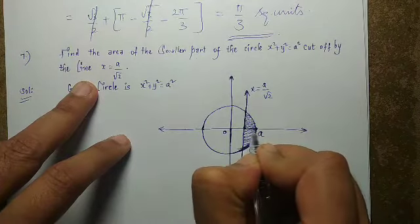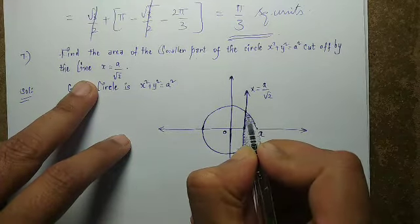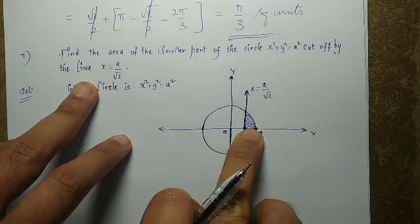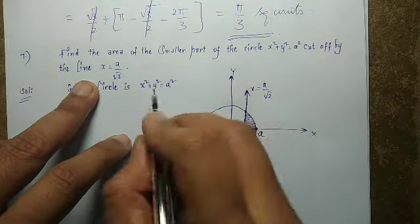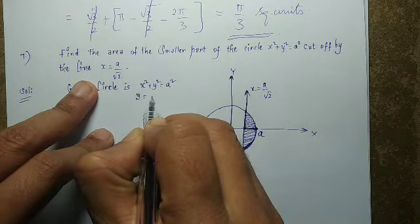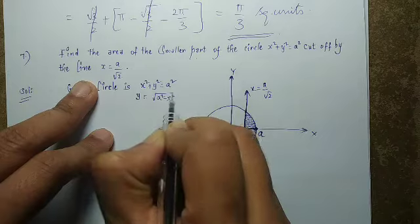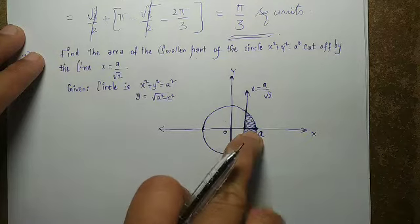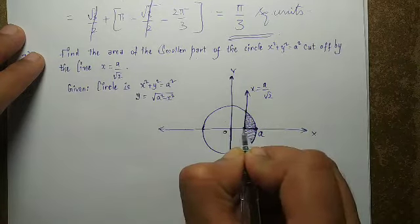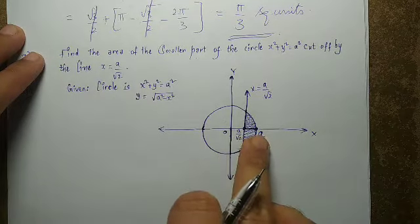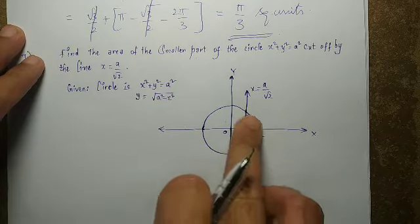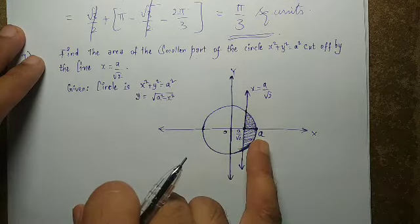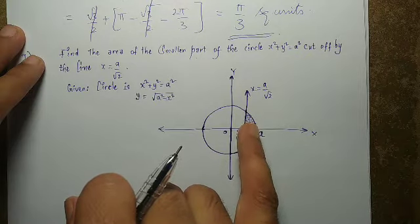First, I will find the area in the first quadrant. The circle equation is x² + y² = a², so y = √(a² − x²). The area in the first quadrant is the integral from a/√2 to a of √(a² − x²) dx.